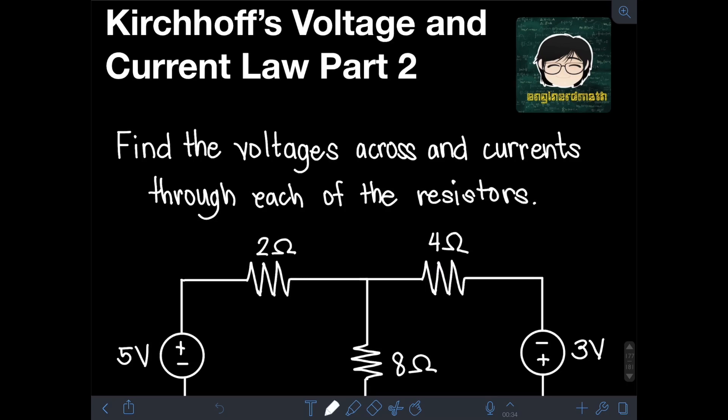I already have a previous video about Kirchhoff's Voltage and Current Law, Part 1, wherein we just discussed the theory and concepts about KCL and KVL. We did not solve any sample problem in that video. So here in Part 2, we will just apply KVL and KCL to solve a particular circuit. If you haven't watched yet the first part, I will put the link in the description so you can check it first, because we're going to use those concepts in our solution for our sample problems using KVL and KCL.